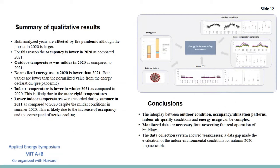Both analyzed years are affected by the pandemic, although the impact in 2020 is larger. As a consequence, the occupancy is lower in 2020 as compared to 2021. Another thing we see from the data is that the outdoor temperature was milder in 2020 as compared to 2021. And of course, both of these factors affected the energy use. We can normalize the energy use with the degree days method to compare years with different weather conditions. And normalized energy use in 2020 was lower than the one in 2021. And both values were lower than the normalized values from the energy declaration, which was pre-pandemic. And further work will be necessary to evaluate the performance in the upcoming years as the buildings get back to normal usage.